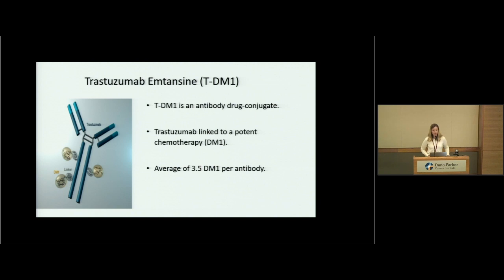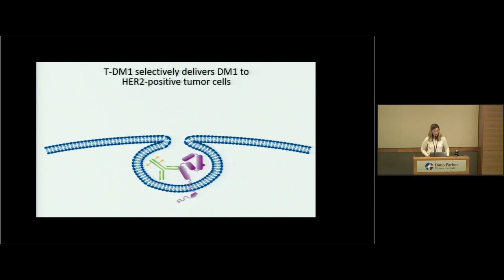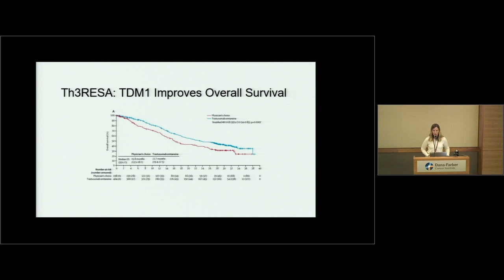TDM1, or Kadcyla, is another development in treating HER2-positive breast cancer. The company likes to call it a smart bomb — it's trastuzumab bound to a chemotherapy that would otherwise be very toxic if given systemically. Tagging it to trastuzumab brings that drug to the HER2-positive cells, which take it in, and the chemotherapy kills the cell. The EMILIA study showed patients who received TDM1 did much better than those on trastuzumab with other chemotherapy.